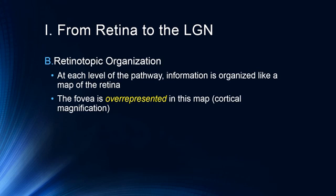What we're looking at in the environment is actually mapped out in the LGN, much like it is in the retina, and similarly in the cortex. Importantly, the fovea is overrepresented in this map, because this is where all of our focal vision is, where most of the cones are, and where cones primarily have a one-to-one, one-cone-per-ganglion-cell spatial summation with no spatial summation. As a result, that part of the retina is overrepresented in the map — this is the idea of cortical magnification.